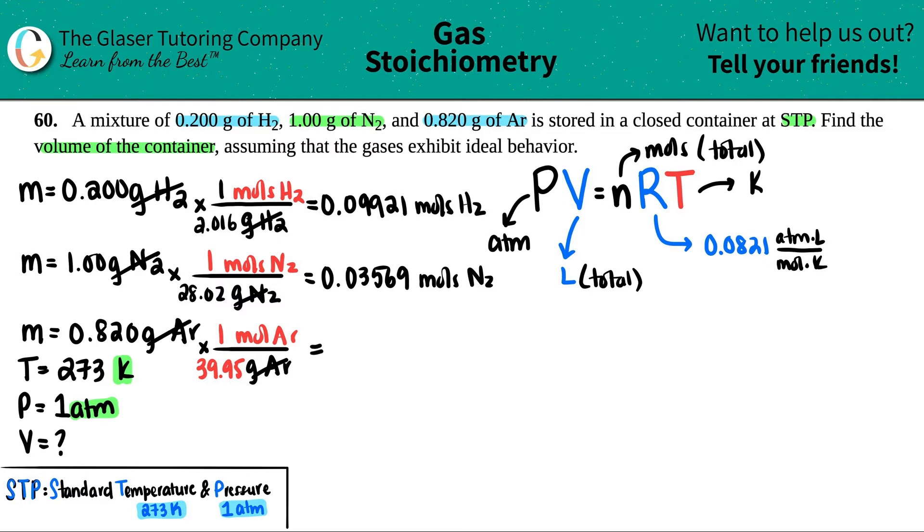39.95. Cancel out the grams of argon, and now let's see: 0.82 divided by 39.95 is 0.02053, and that's moles of argon.